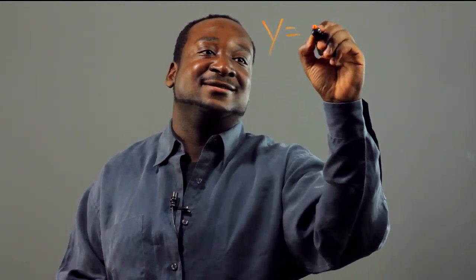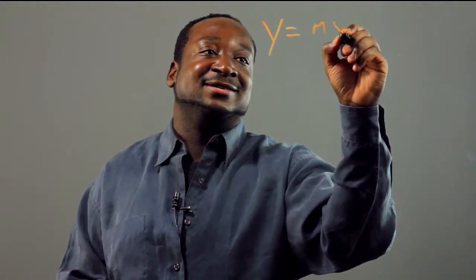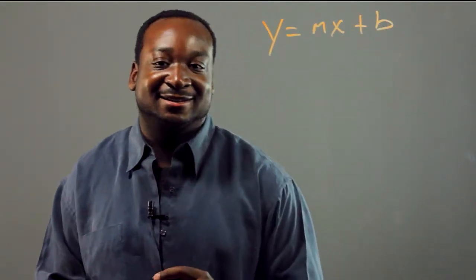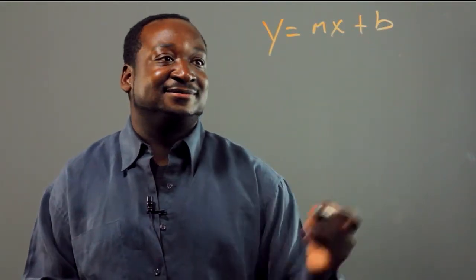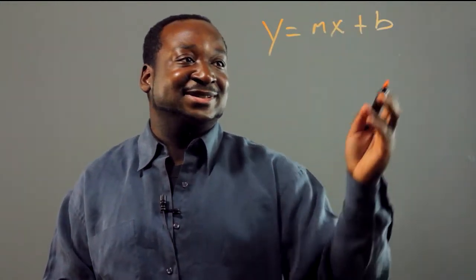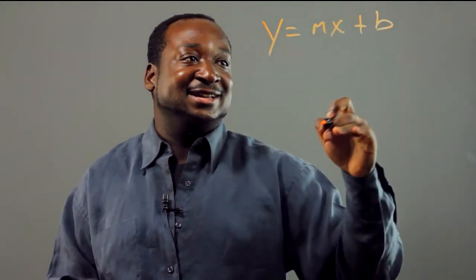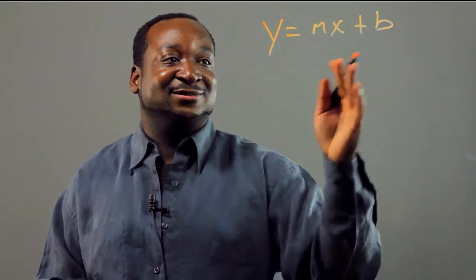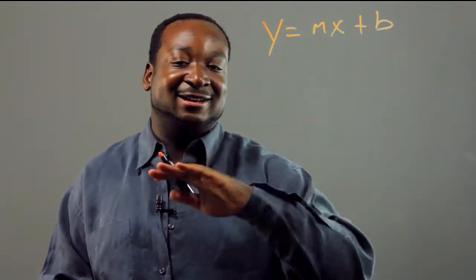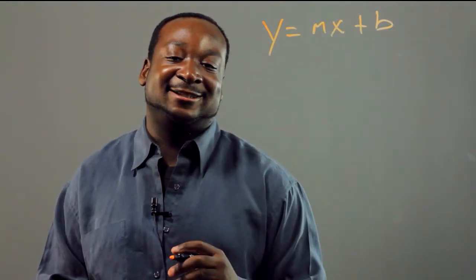Let's start off with a basic binomial format: y equals mx plus b. Graphing this, m is the slope and b is where the line intersects the y-axis.